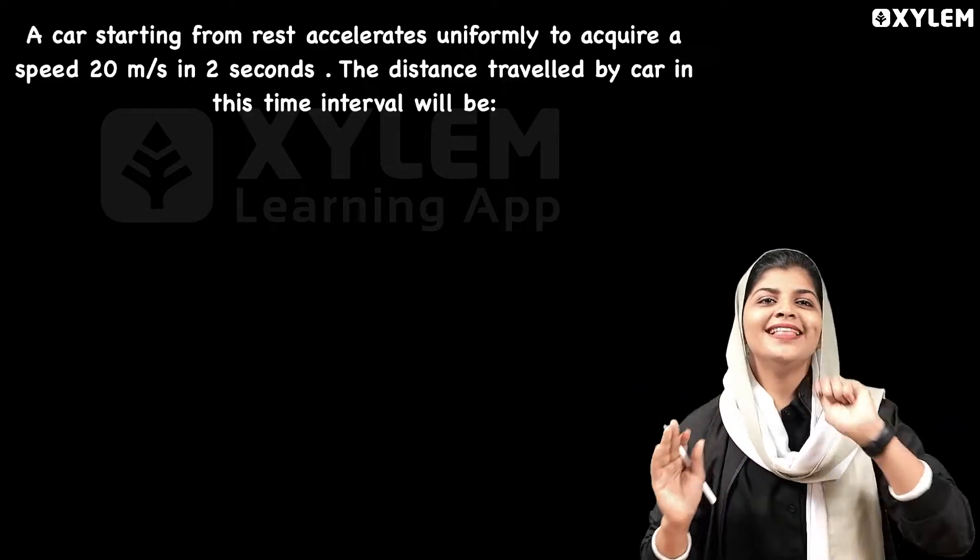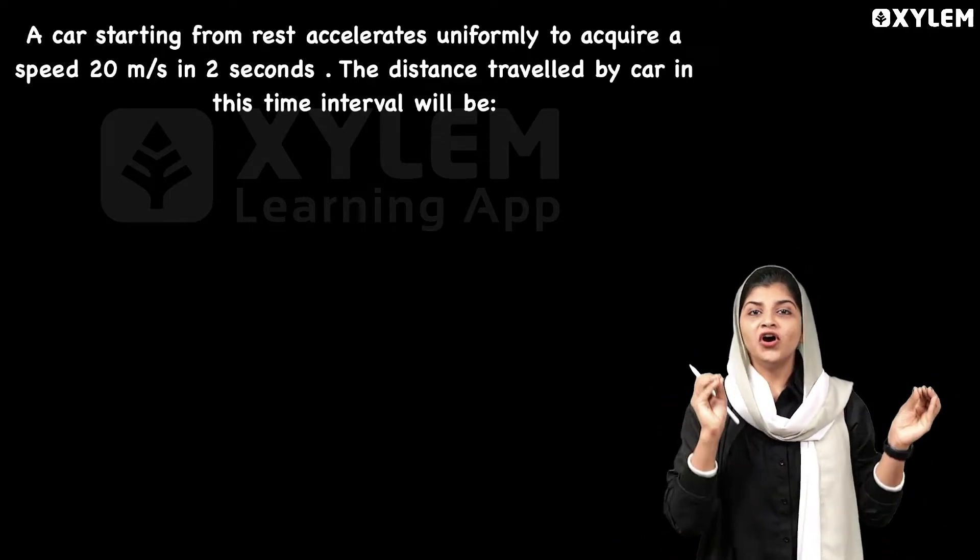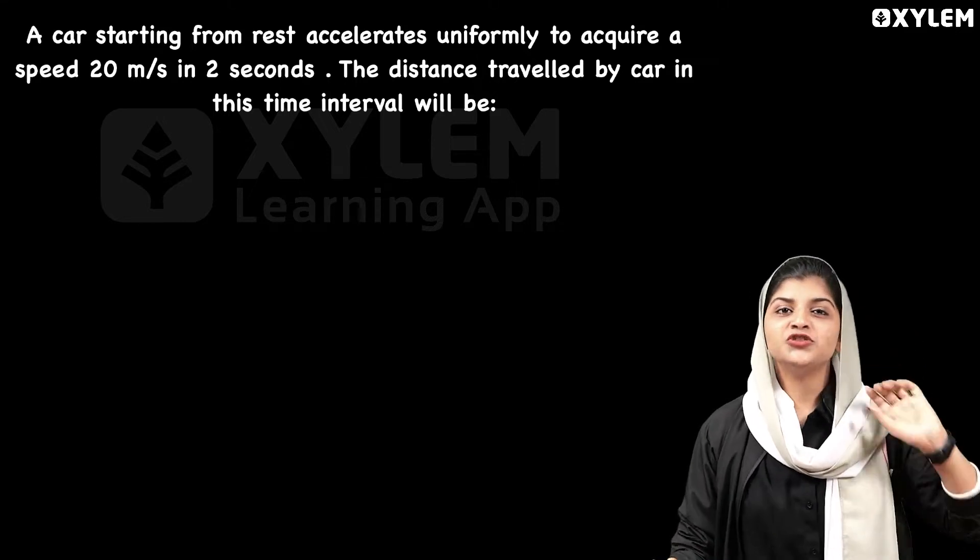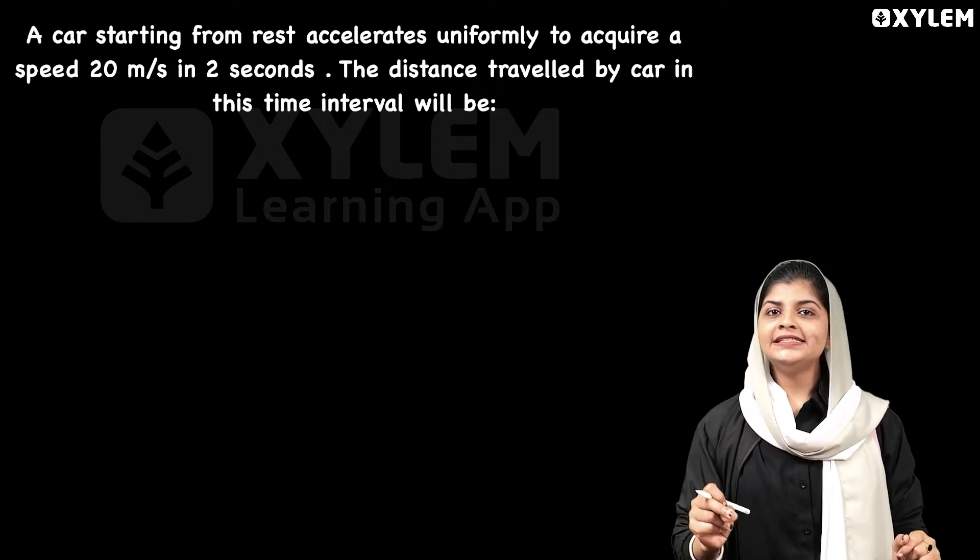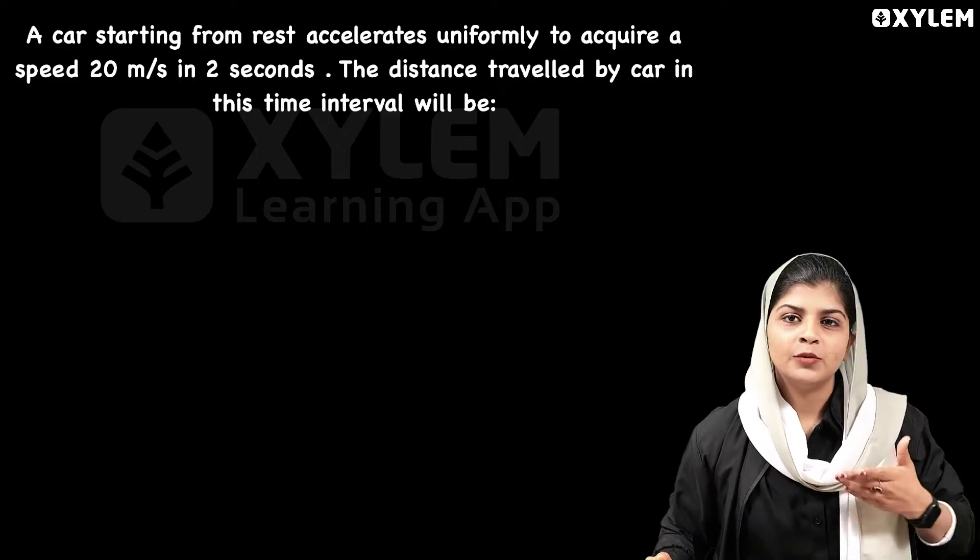So let's look at the problem: A car starts from rest, accelerates uniformly to acquire a speed of 20 meter per second in 2 seconds. The distance travelled by car in this time interval will be what we are looking for.